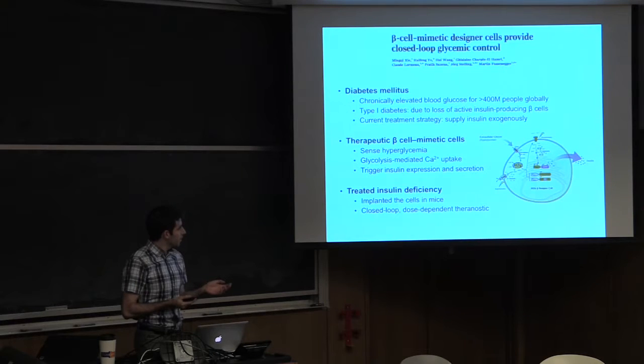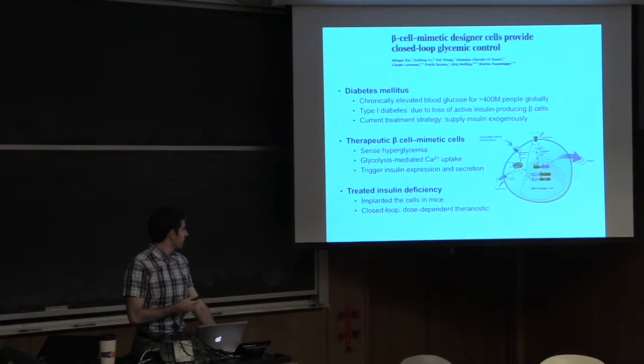So the current treatment strategy is typically to just take shots of insulin, and what they did here is they engineered these cells. They don't travel throughout your body, but rather just sit in an implant, and they're able to sense the elevated glucose levels.